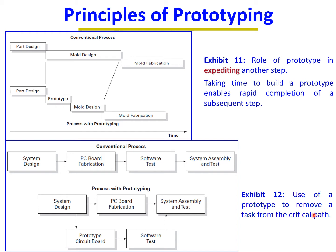Exhibit 12 shows the use of a prototype to remove a task from the critical path. Conventionally: system design → PC board fabrication → software test → system assembly and test. With prototyping: system design → PC board fabrication → system assembly and test, while a prototype circuit board enables software testing in parallel. You bypass waiting for PC board fabrication to do software testing.